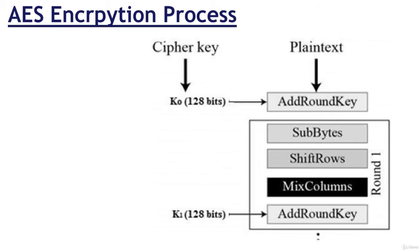Let's discuss mixed columns. Each column of 4 bytes is now transformed using a special mathematical function. This function takes as input the 4 bytes of one column and outputs 4 completely new bytes, which replace the original column. The result is another new matrix consisting of 16 new bytes. It should be noted that this step is not performed in the last round. Finally, let's discuss add round key. The 16 bytes of the matrix are now considered as 128 bits and are XOR'd to the 128 bits of the round key.